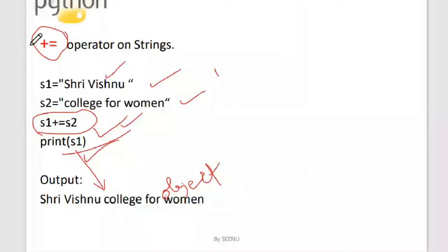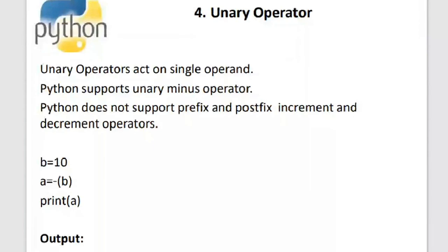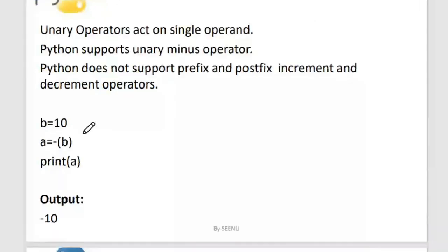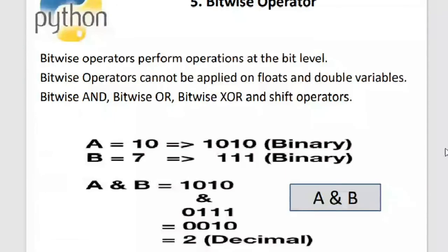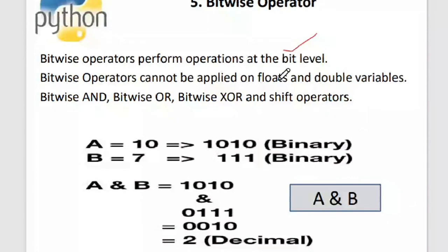The next operator is the unary operator, which acts on a single operand. For example, b = 10, then a = -b converts 10 to -10 because of the minus sign. A very important point: Python does not support prefix or postfix increment and decrement operators. Next are the bitwise operators, which perform operations at the bit level and cannot be applied to floats or doubles.